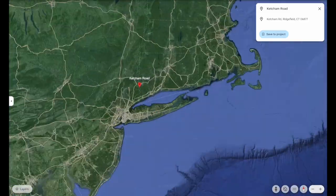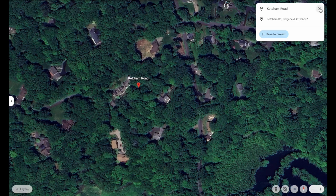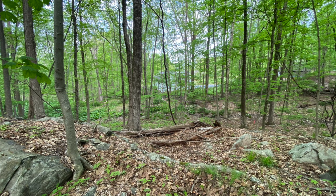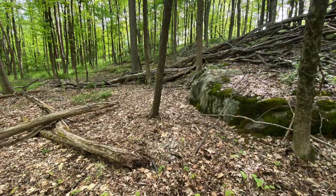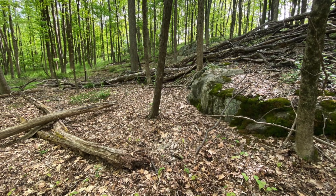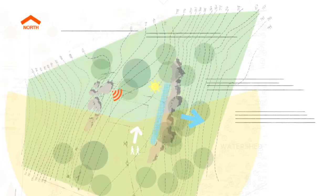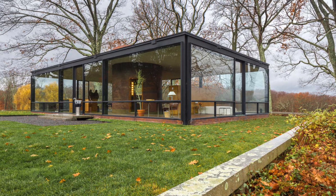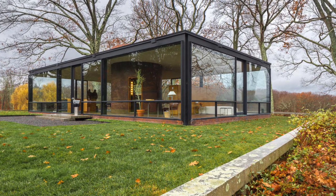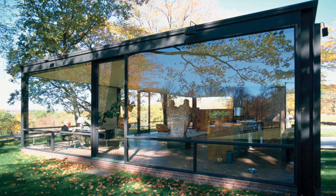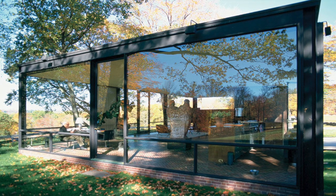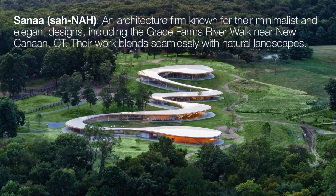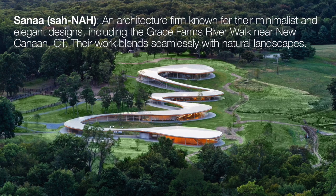This is a house for a new client on a very wooded site in the northeast. There are lots of boulders, a perfect hardwood eastern forest, and there's a dramatic drop-off on one side of the site over these huge boulders that we want to take advantage of. The client loves two important pieces of architecture: the Philip Johnson Glass House and the Sanaa Grace Farms Riverwalk structure.